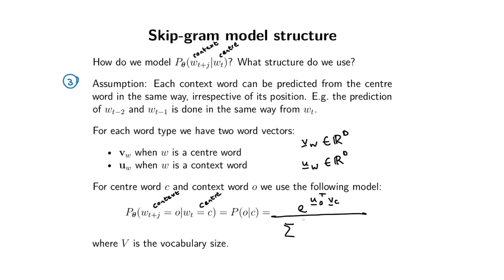One way to do that is to normalize by the sum: if we sum up all the exponentials over all the different context word types — that's little k, taking the dot product with the center word and summing k from one to capital V over the vocabulary — this gives a properly normalized value between zero and one. If you've done a course on neural networks, you've probably seen this before: this is the softmax function, specifically the O-th element of the softmax output.